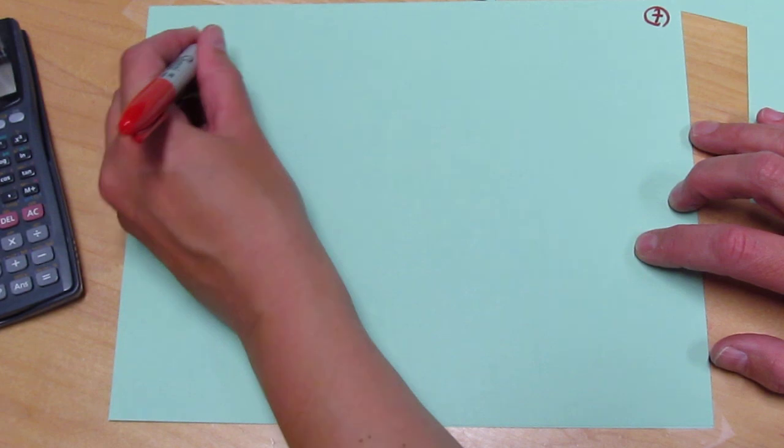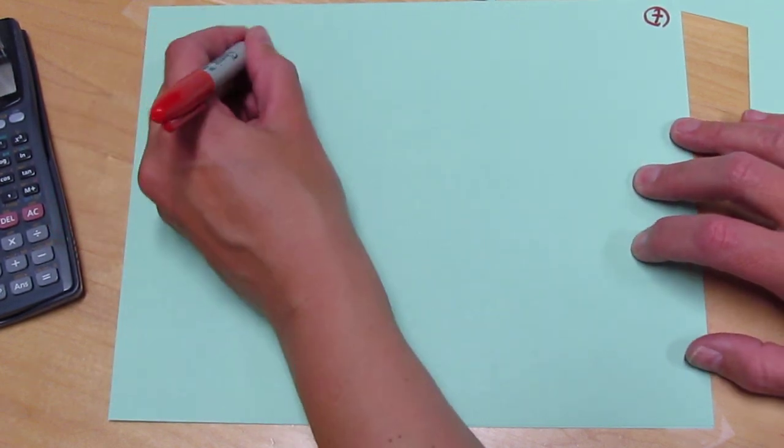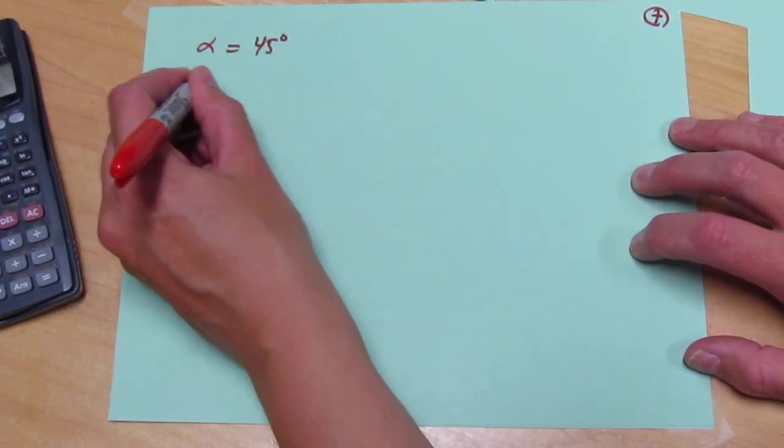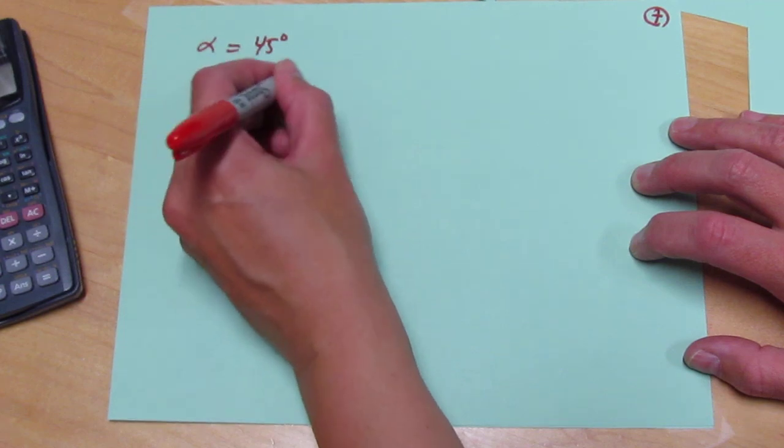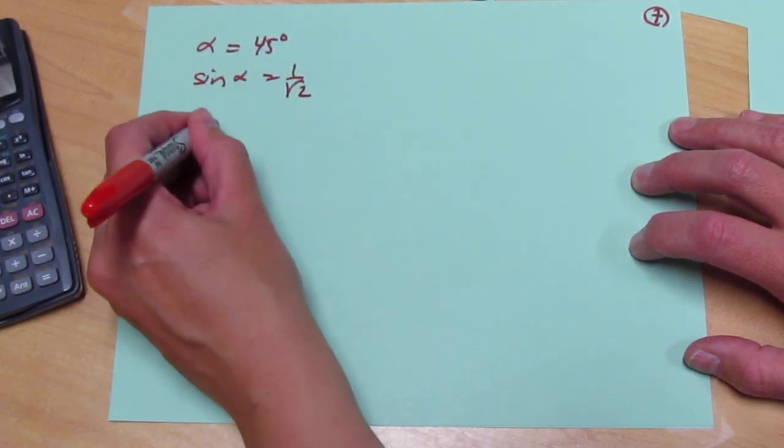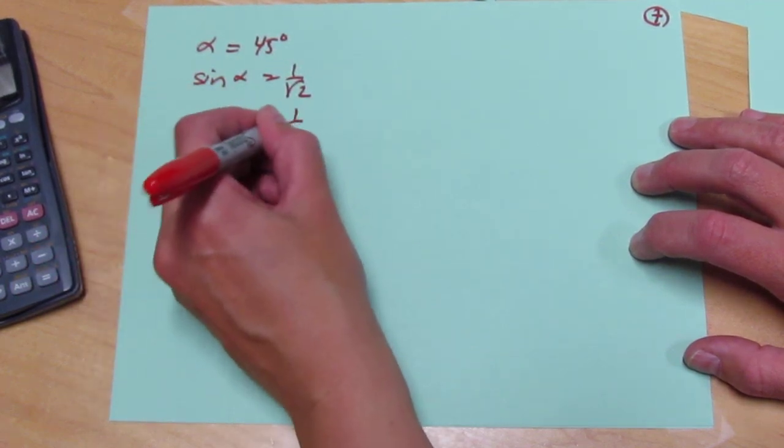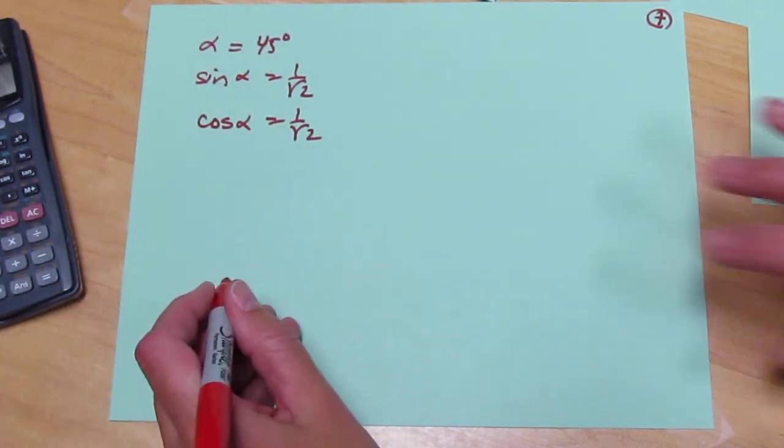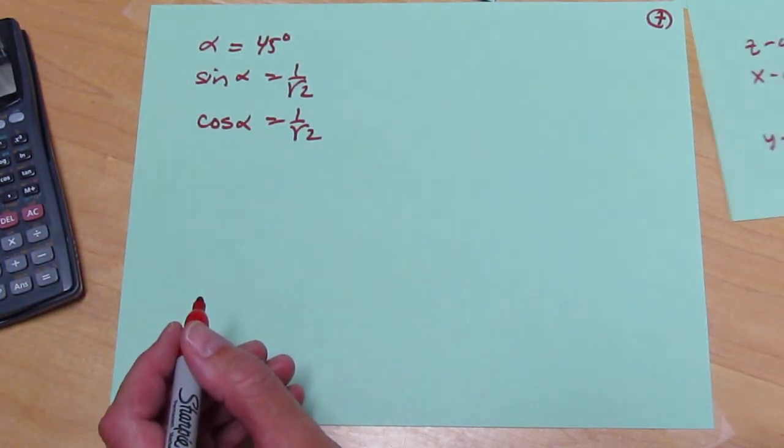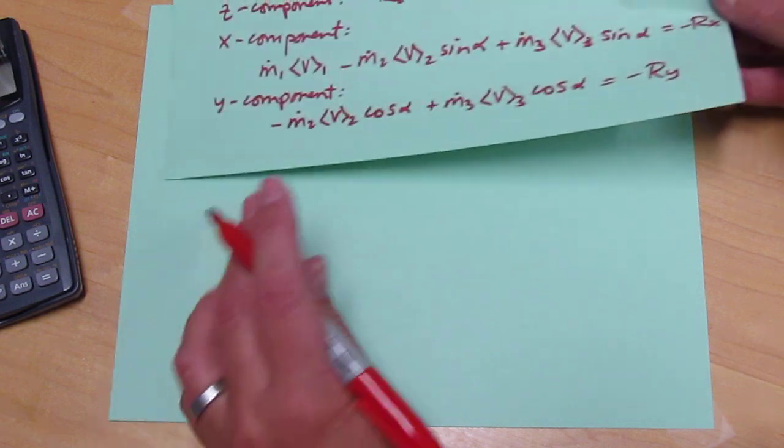We also know that alpha is equal to 45 degrees, and so the sine of alpha equals 1 over the square root of 2, and the cosine of alpha is also 1 over the square root of 2. So, they're equal to each other.